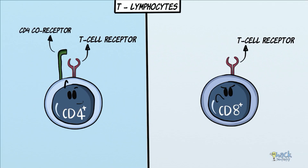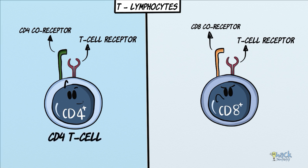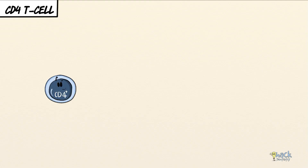CD4 and CD8 proteins are coreceptors that are specifically present in subsets of T cells. A T cell that possesses a CD4 coreceptor is called a CD4 T cell, and one that possesses a CD8 coreceptor is called a CD8 T cell. A CD4 T cell is also called a helper T cell.